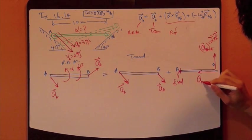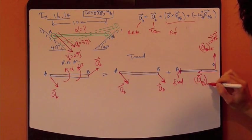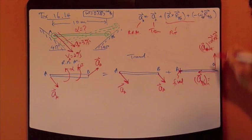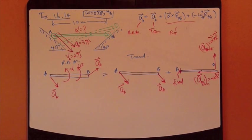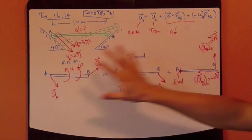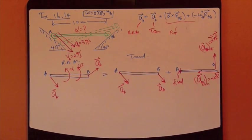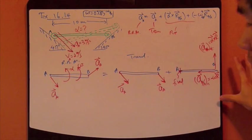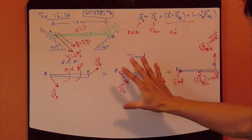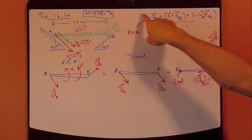acceleration of B, relative to A, normal, equal to this guy right there, negative omega squared R. Okay, so now we'll establish this picture right here, and this is the kinematics diagram, right? So next thing you do, just apply this equation.